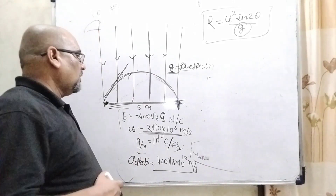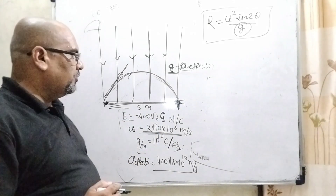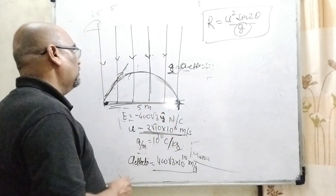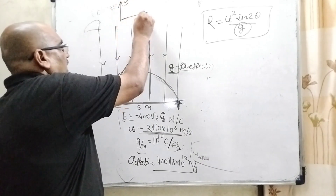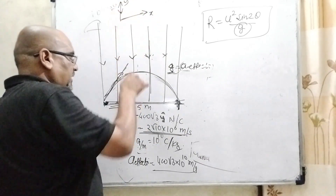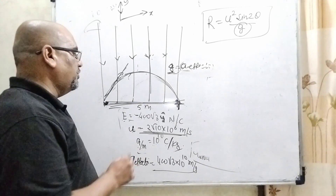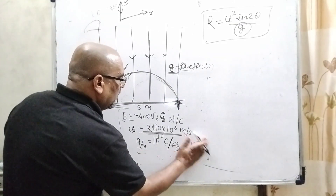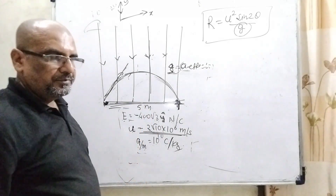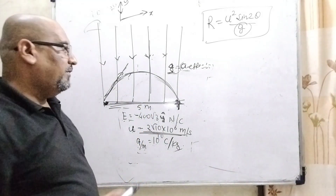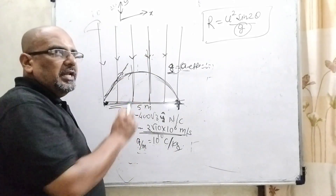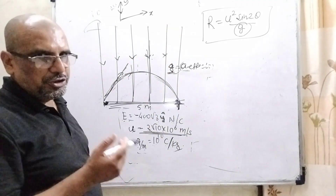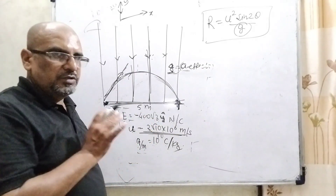In this question we are given a uniform electric field of magnitude 400√3 newton per coulomb in the negative y-direction — downward. Initial velocity u = 2√10 × 10⁶ m/s, and q/m ratio is 10¹⁰ coulomb per kilogram. We will use two concepts: first, the relation between electric field and acceleration; and second, projectile motion kinematics for the range.